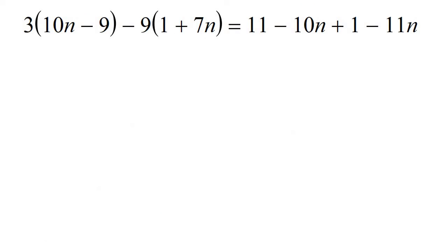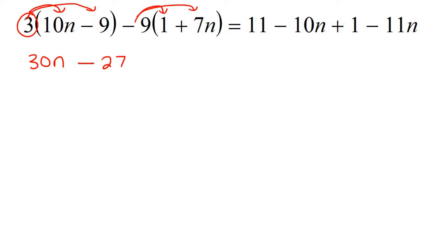In this example, we can see that we've got these brackets, so our first step is just to get rid of the brackets. The way that we do that is by multiplying the numbers into the brackets. We'll do that one, and then we're also going to have to do this minus 9. So that's going to give us 30n minus 27, and then minus 9, and then minus 63n. You've got to be very careful with a negative multiplied with a negative, or a negative multiplied with a positive — you've got to always look out for that. And then on the right-hand side, everything is just pretty standard.